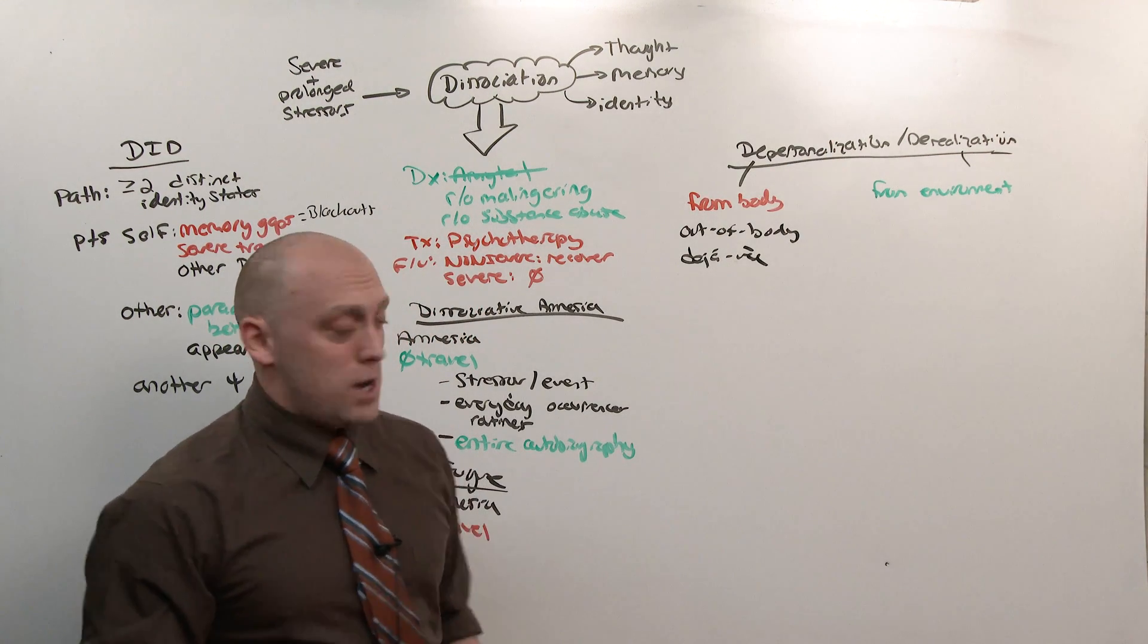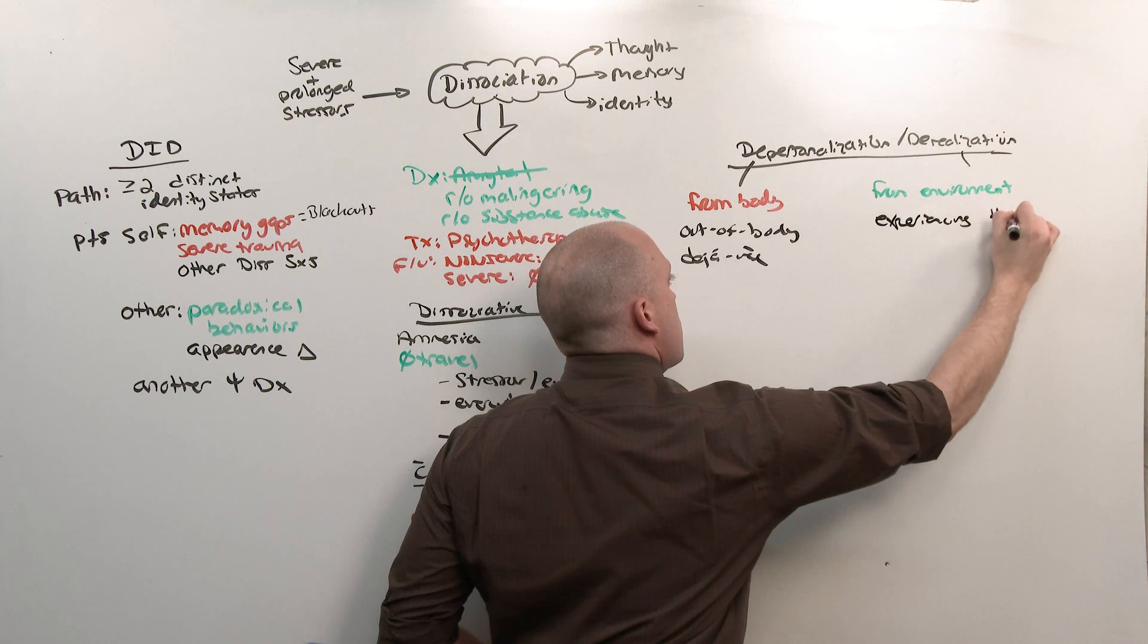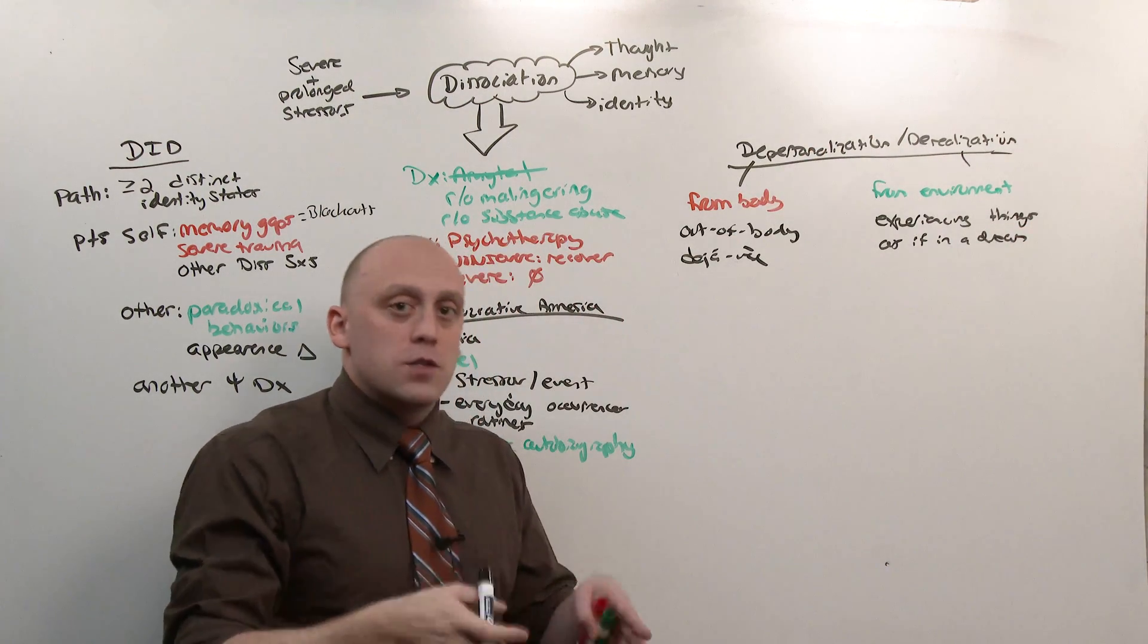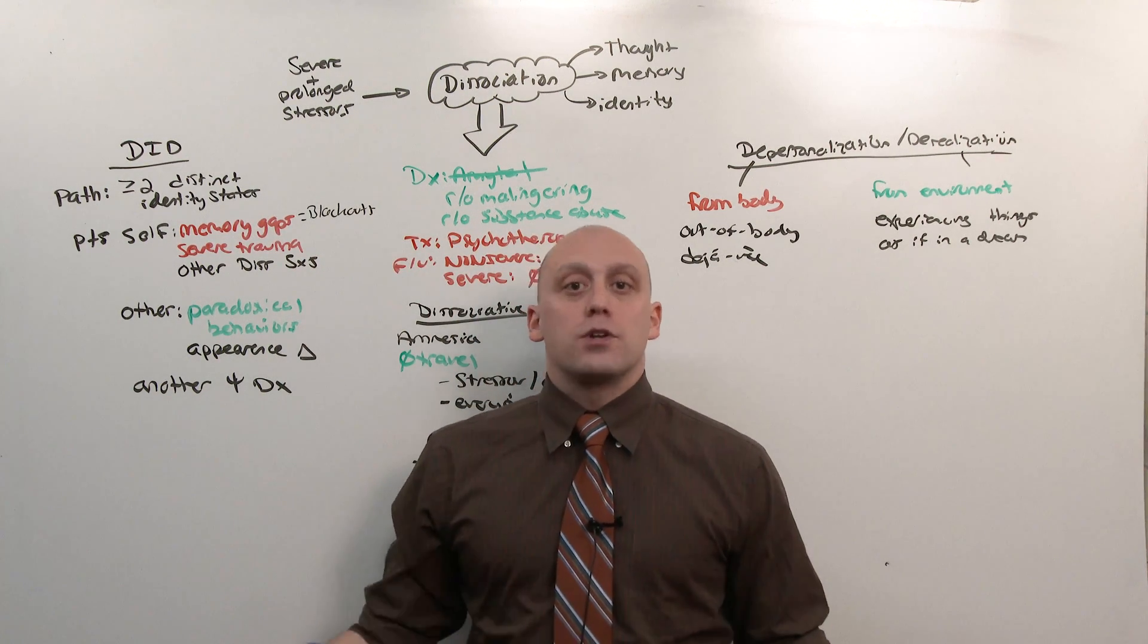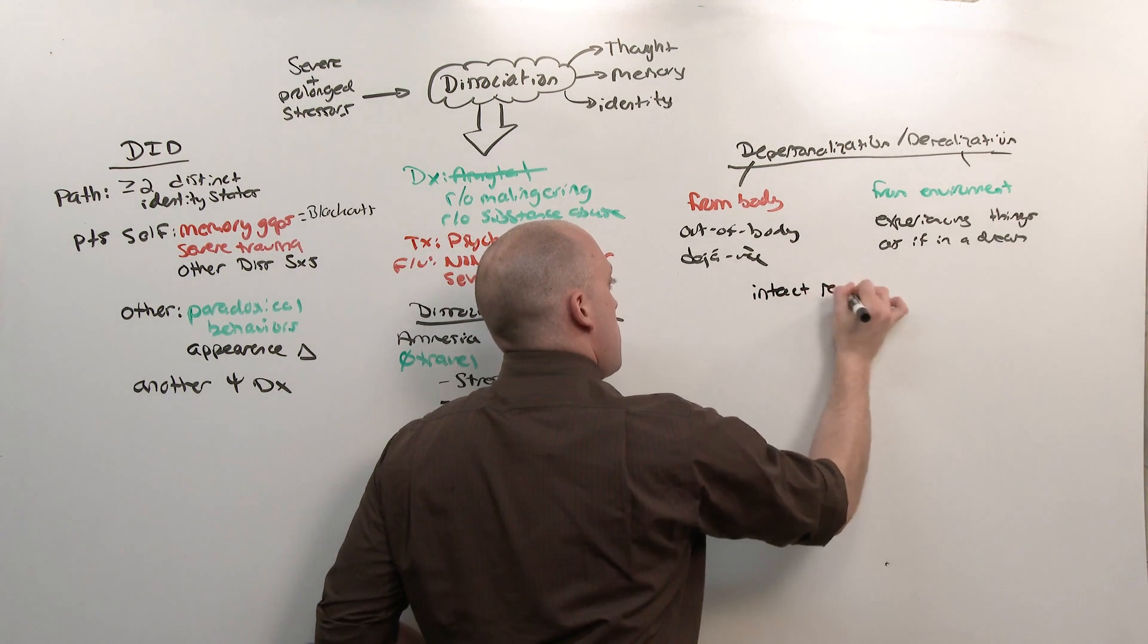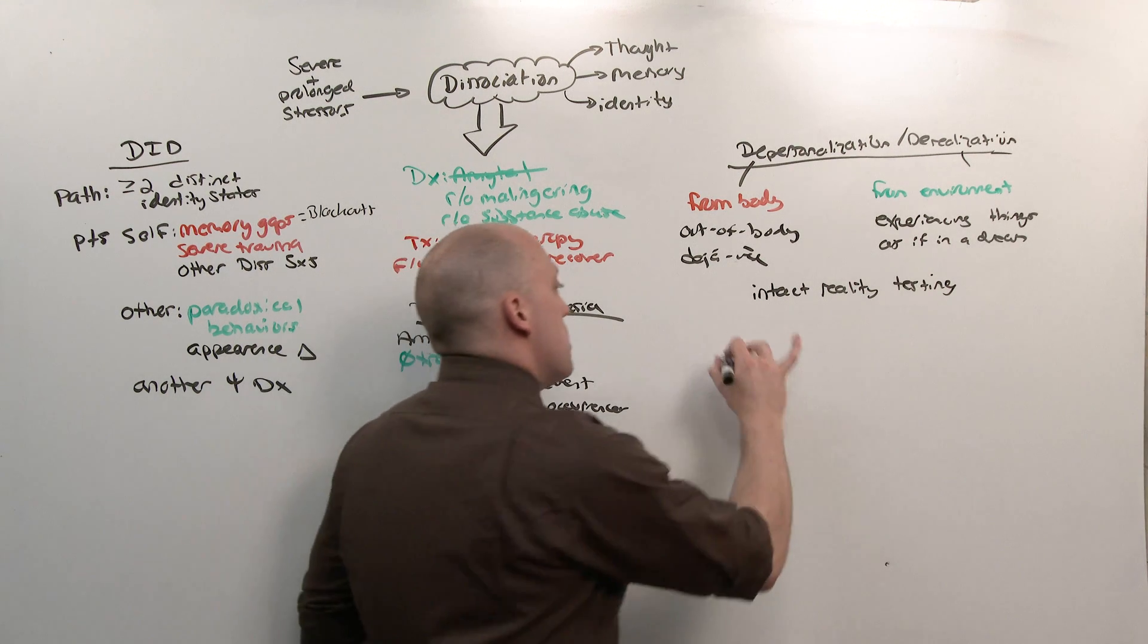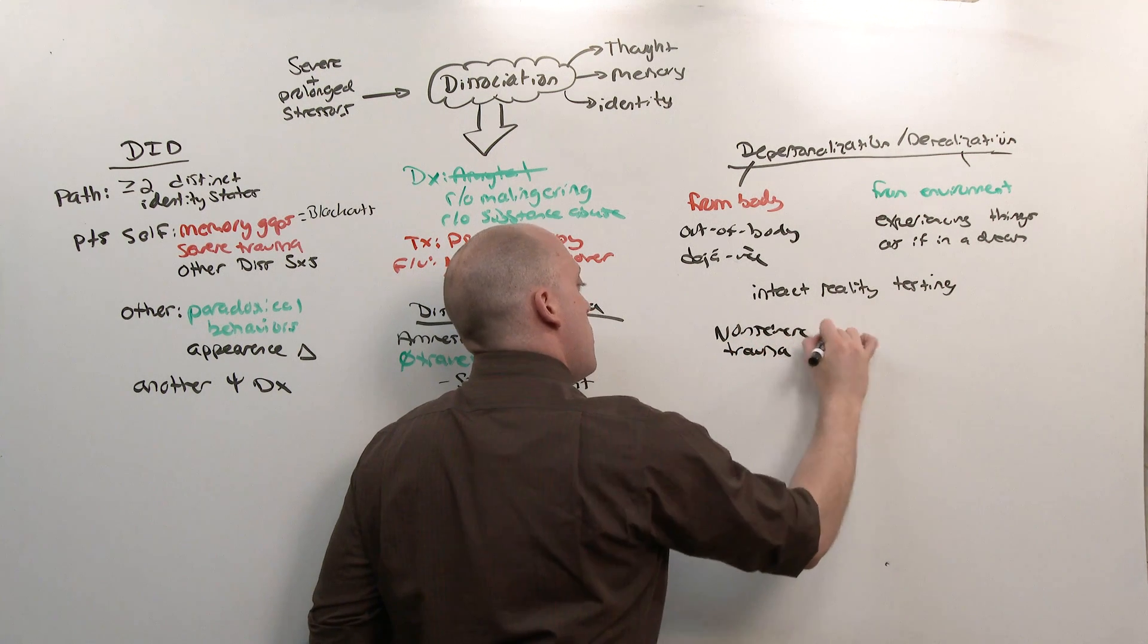Derealization is even harder to explain. It's going to be something like experiencing things as if they're in a dream. So depersonalization is watching yourself as though you're watching a movie of yourself. And derealization is experiencing the things in your environment as though they're unreal or in a dream. Usually, what you're looking for is an intact reality testing, that is, they're not psychotic. And depersonalization and derealization usually occur in a non-severe trauma or stressor in an adolescent.